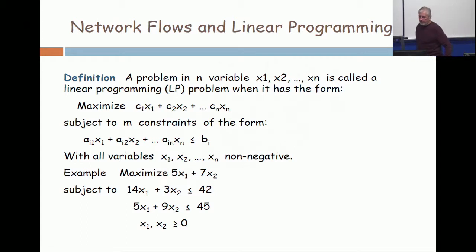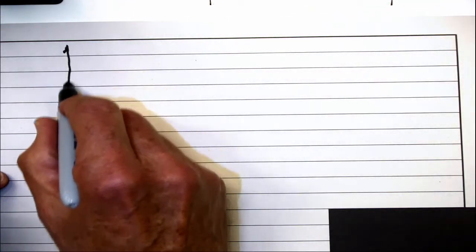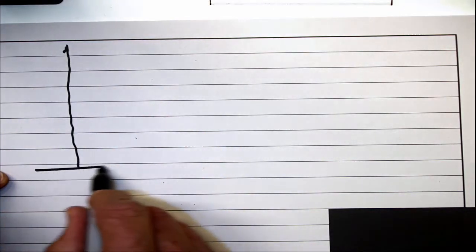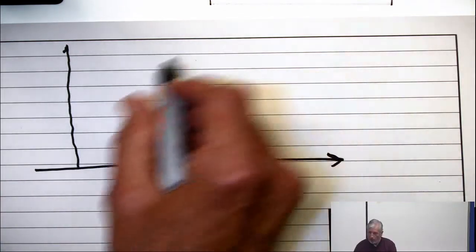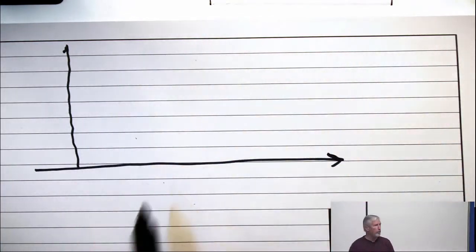I will bet that many of you solved a problem just like this in high school. I'm going to leave the problem up over there, and I'm going to write on the dot cam over here. What does the solution to that problem look like? The constraints x1 and x2 greater than or equal to zero mean that you're looking at this quadrant, the first quadrant in the plane.